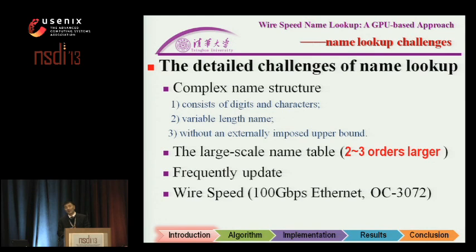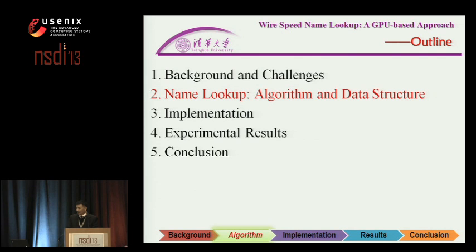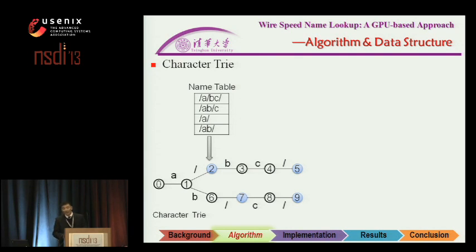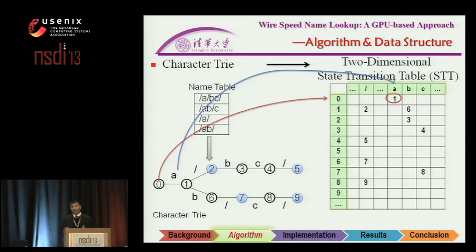The last requirement is high-speed lookup. Facing these big challenges, we have to work on both design-level innovation and implementation-level re-engineering. To describe our algorithm and structure: recall the requirement for longest prefix matching. We need to design an appropriate structure to represent the name table. Here we choose the characteristic trie. However, traversing the characteristic trie consumes much more time. So, in order to speed up lookup, we designed another structure — a two-dimensional table called STT, the state-transition table.